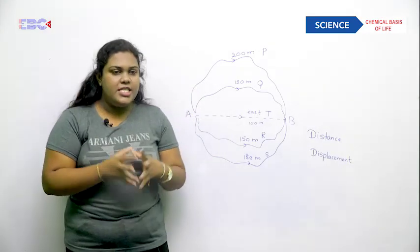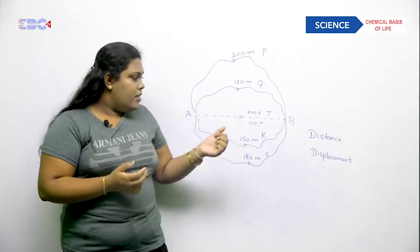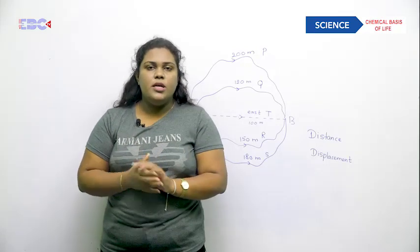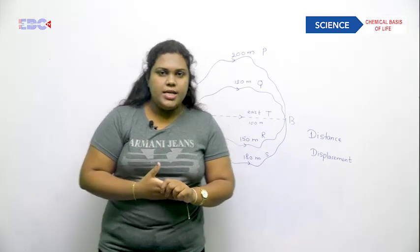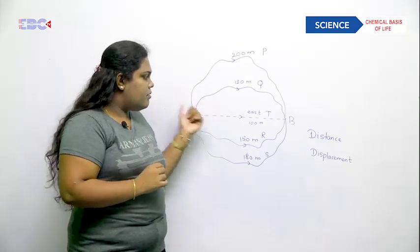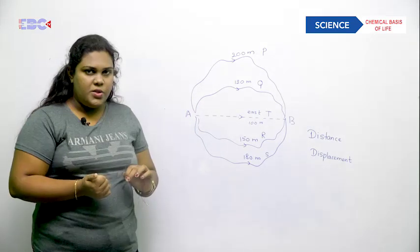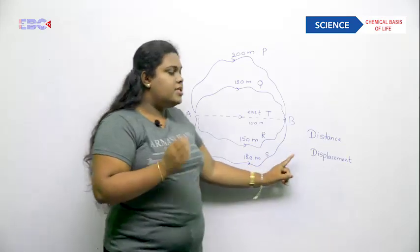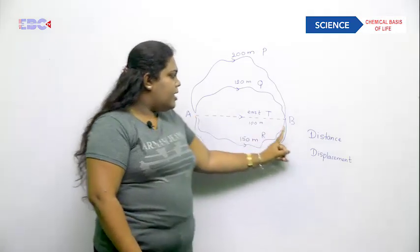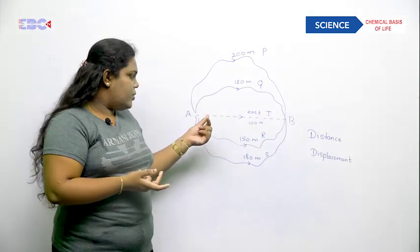Distance is the length of the path, and displacement is the direct direction between two points for a particular direction — that is the displacement. Looking at this diagram, you can clearly see what is the distance and what is the displacement.